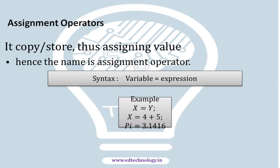Next up is assignment operators. This is basically used to store the values — it copies or stores values into a variable. We have an example: variable equals expression. So x equals y means whatever the value of y will be stored in x. C works from right to left, so 4 plus 5 equals x means the total will be stored in x. Similarly, assigning the value 5 equals 3.1416 which is a global constant. This is the assignment operator.